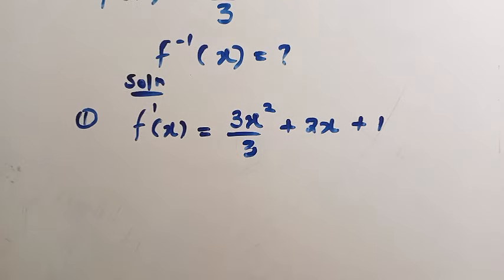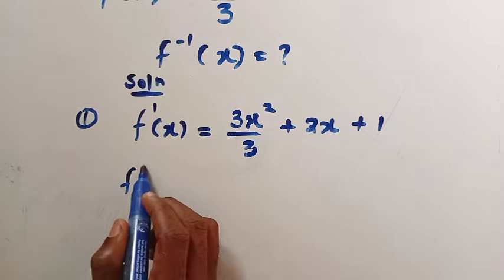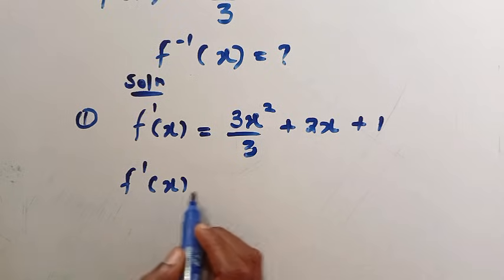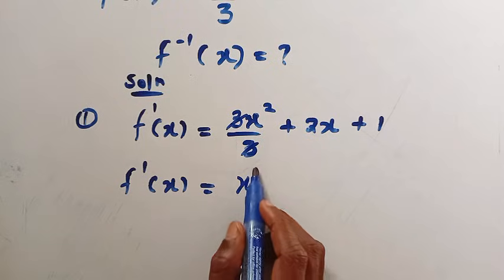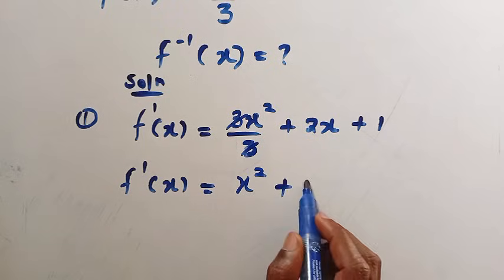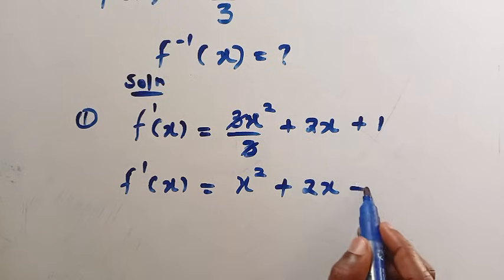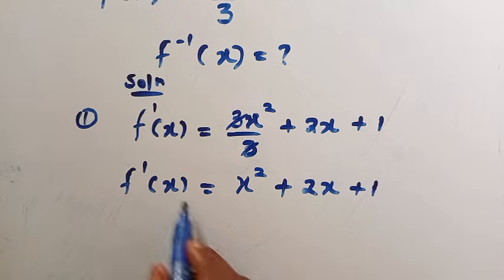And in the next step, we have f prime of x equals, when 3 cancelled 3, we have x squared plus 2x plus 1. Here is the derivative of the function.